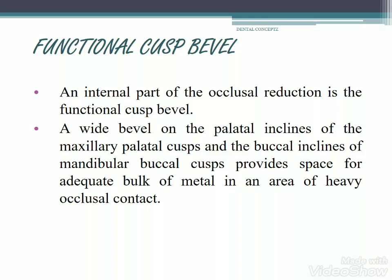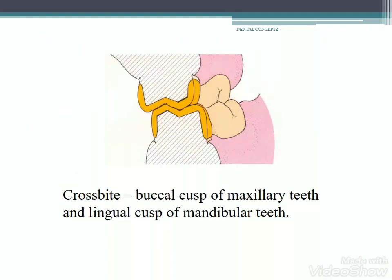An important part of occlusal reduction is the functional cusp bevel. A wide bevel on the palatal inclines of the maxillary palatal cusp and the buccal inclines of the mandibular buccal cusp provides space for adequate bulk of metal in an area of heavy occlusal contact. In cases of crossbite, the buccal cusp of maxillary teeth and the lingual cusp of mandibular teeth should be considered as the functional cusp.